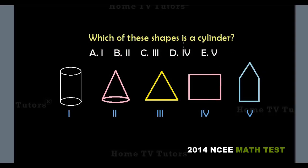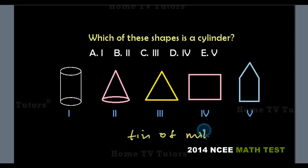Which of these shapes is a cylinder? Remember, a cylinder has two plain faces which are both circles, and one curved face — as in the case of a tin of milk, which has a top face and a bottom face. So the answer option A is the right answer.